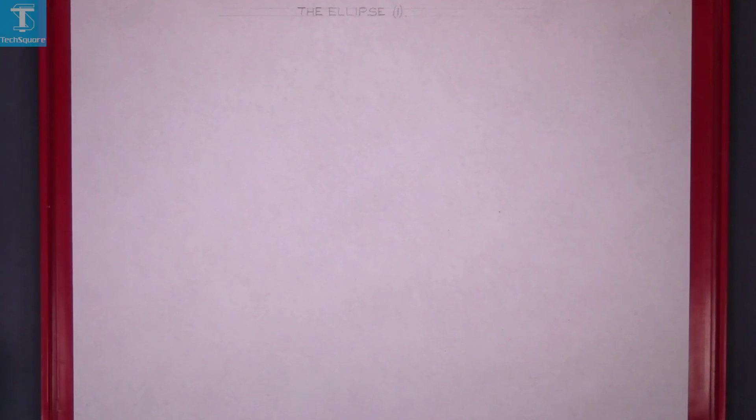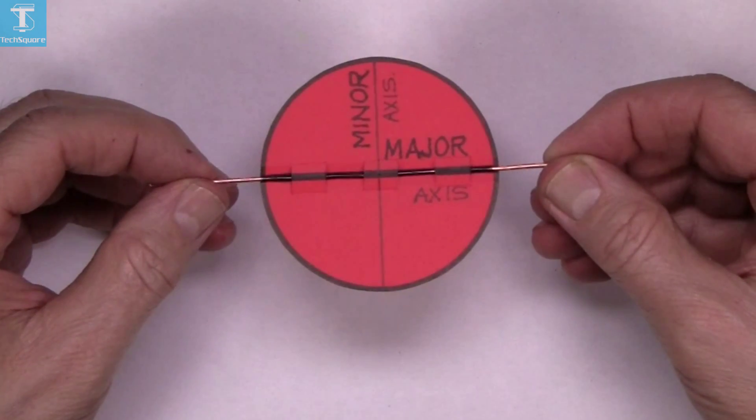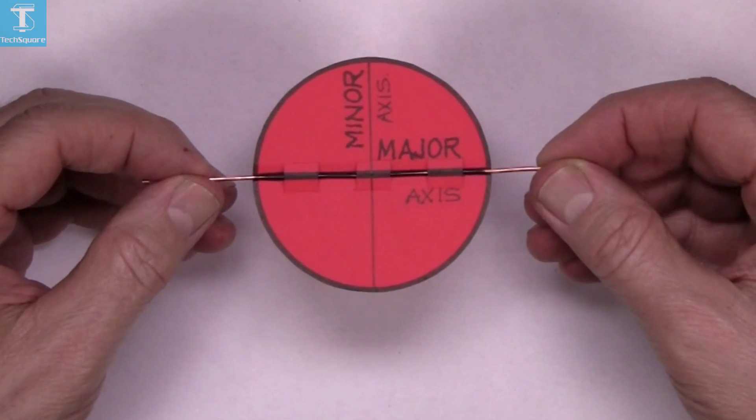The ellipse. When you look at a circle at any other way, other than 90 degrees to its surface, you see an ellipse.